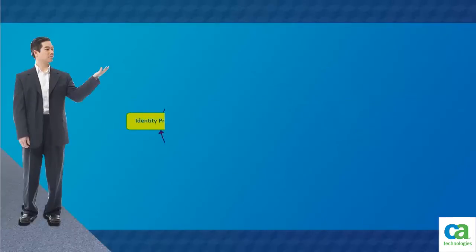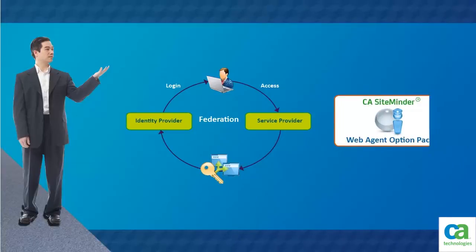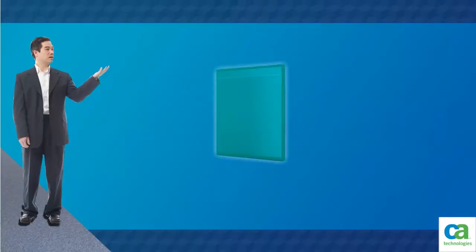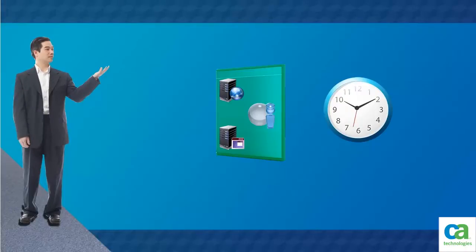In many CA SiteMinder environments that use Federation, Federation is configured using the CA SiteMinder Web Agent Option Pack. This option pack requires several components that must be installed and configured, including a web server, application server, web agent, and web agent option pack before Federation can be configured. Deployment of these various components may take some time.